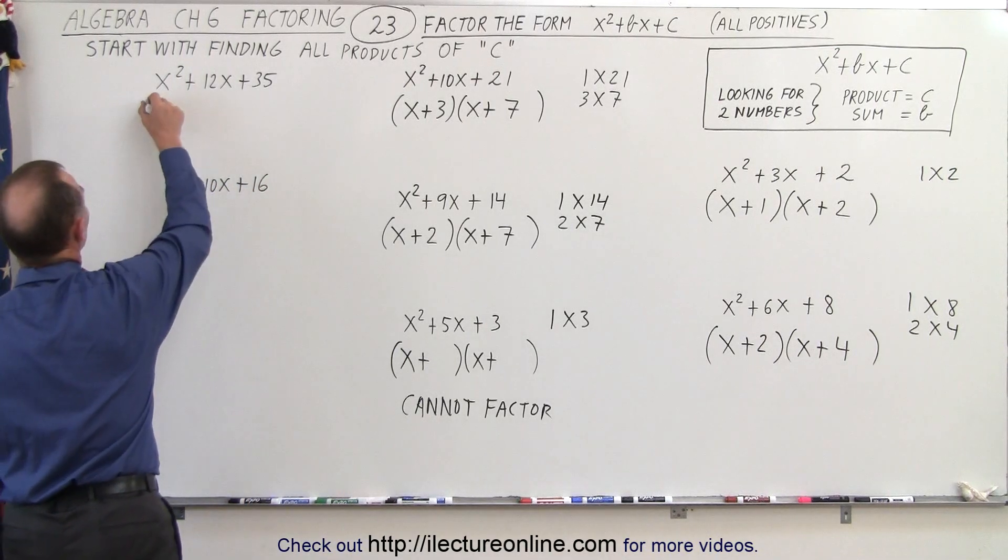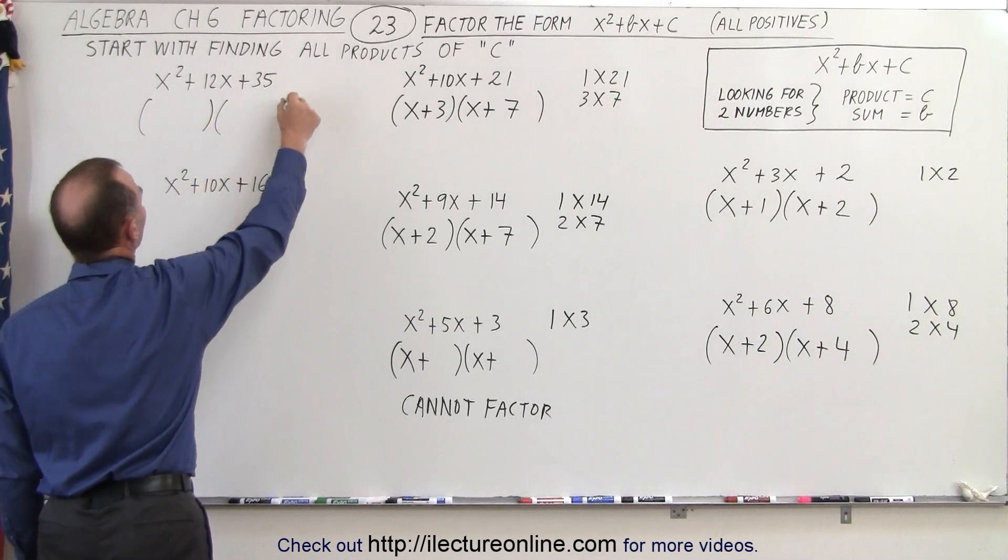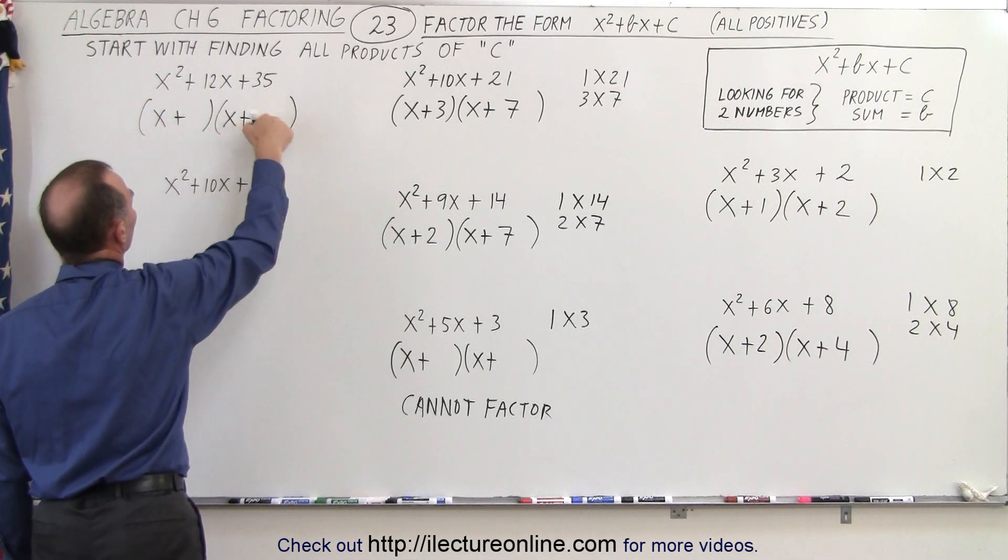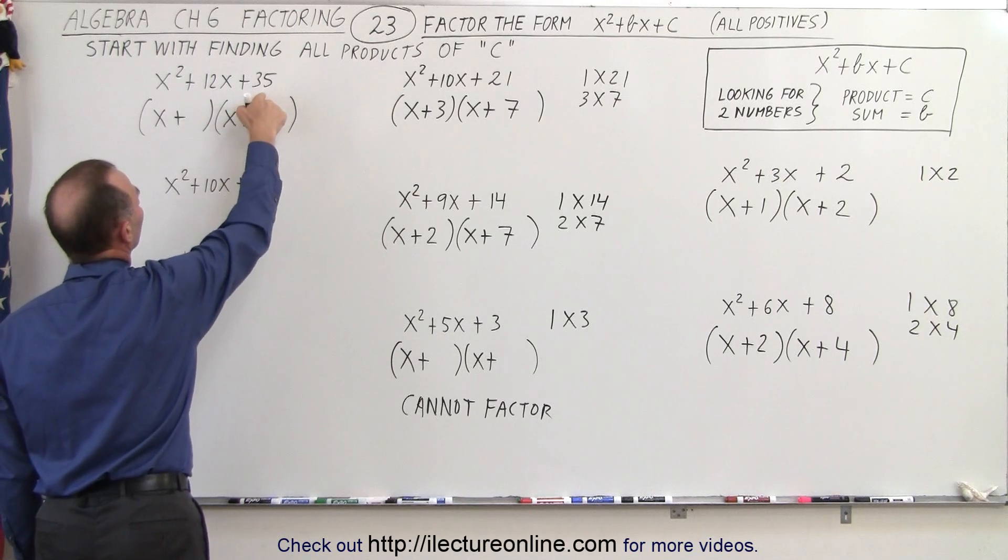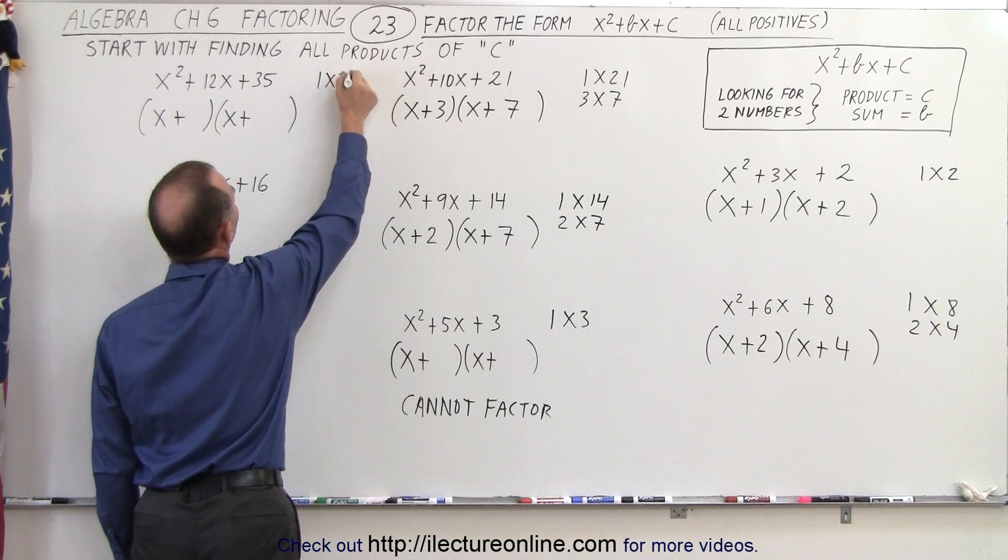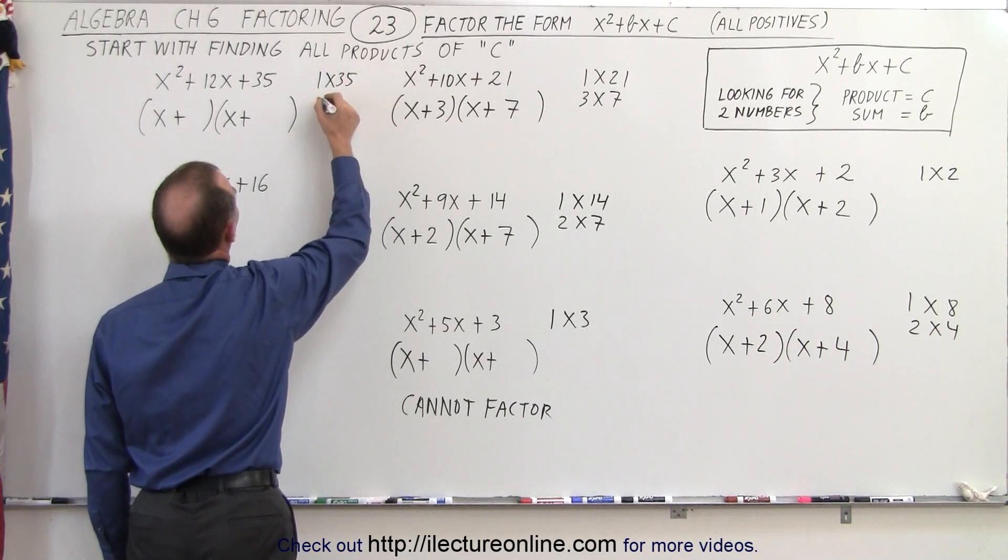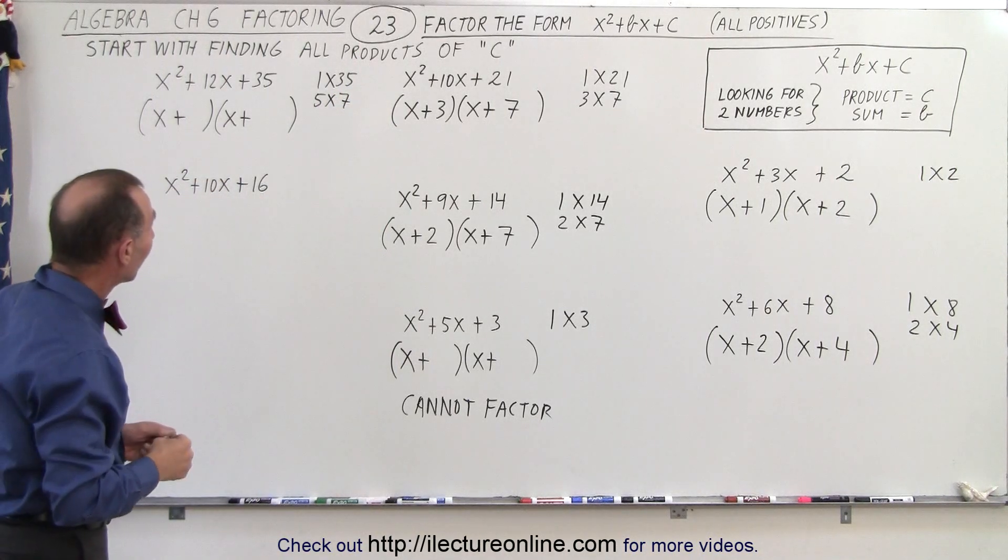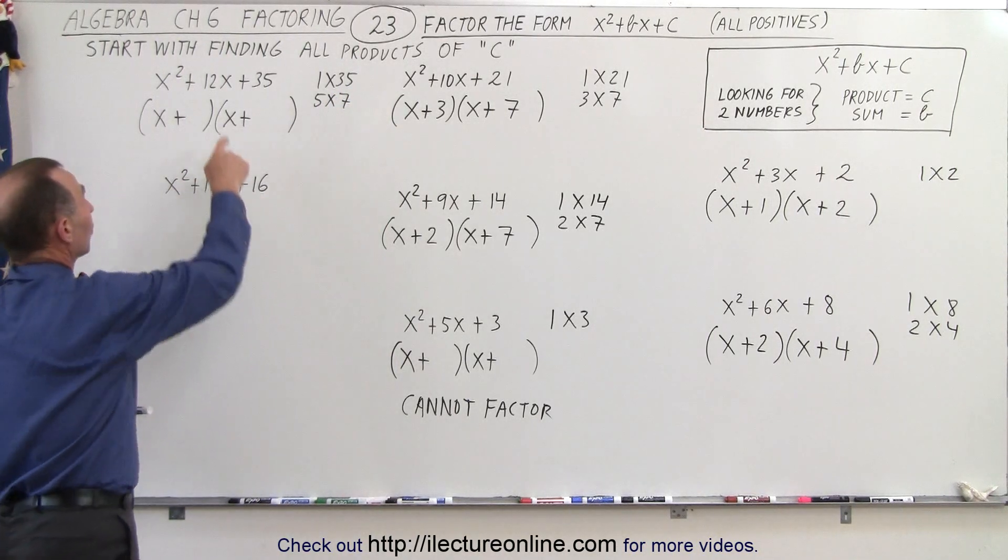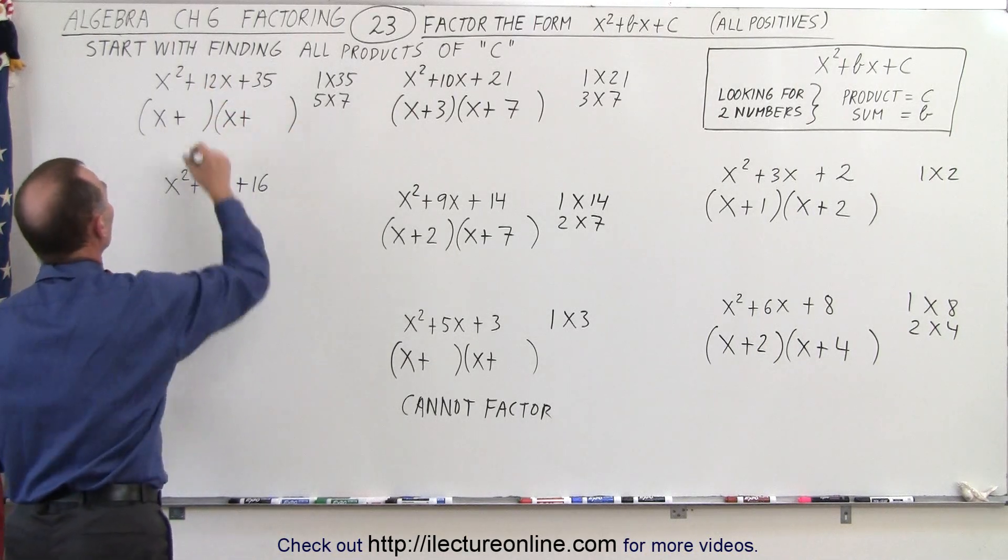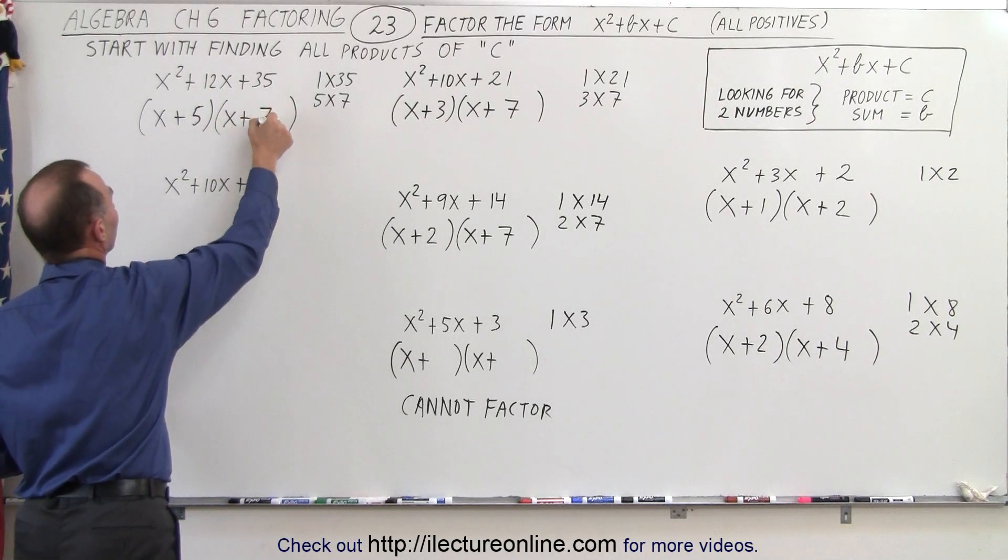All right. Our next combination. Again, we should end up with something that looks like this. x plus, x plus. And the two numbers we're looking for. The product is 35. The sum is 12. So we have 1 times 35. And let's see here. We have 5 times 7. I think those are the only possibilities. So 1 and 35 together does not add up to 12. But 5 plus 7 adds up to 12. So we can factor this as x plus 5 and x plus 7.